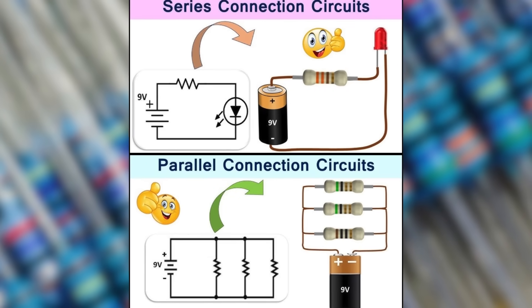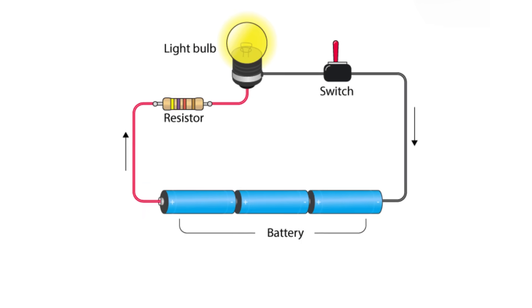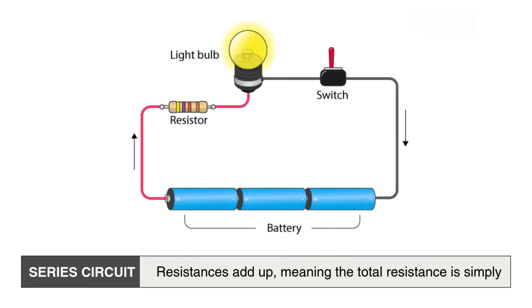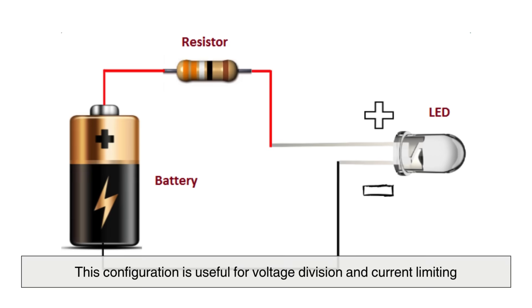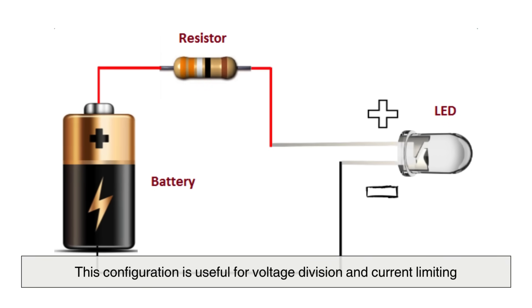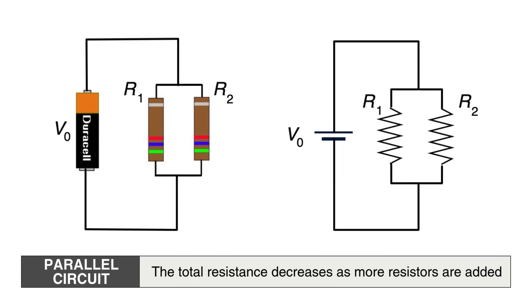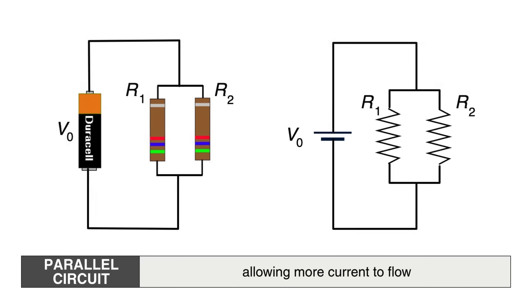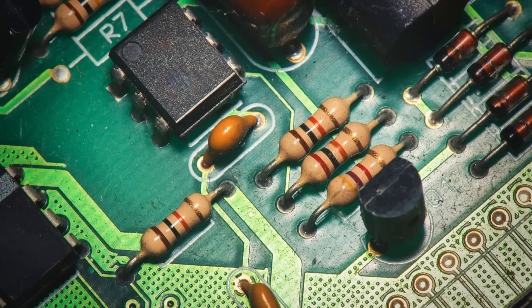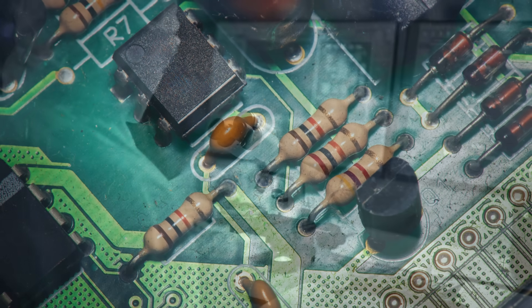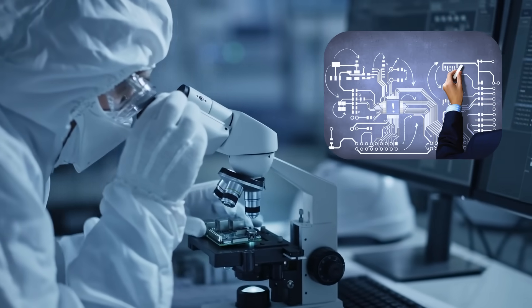Resistors can be connected in series or parallel configurations, each affecting circuit behavior differently. In a series circuit, resistances add up, meaning the total resistance is simply the sum of all individual resistors. This configuration is useful for voltage division and current limiting. In parallel circuits, however, the total resistance decreases as more resistors are added, allowing more current to flow. This setup is commonly used in power distribution systems and electronic circuits where load balancing is necessary. Engineers carefully design circuits using these principles to achieve the desired electrical properties.